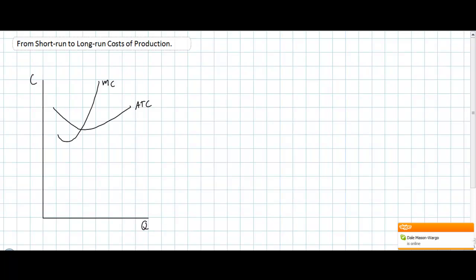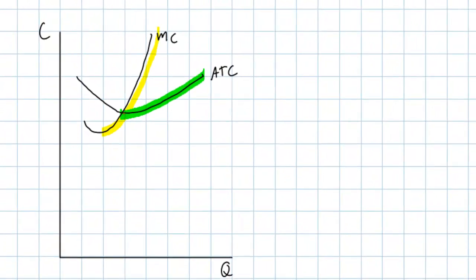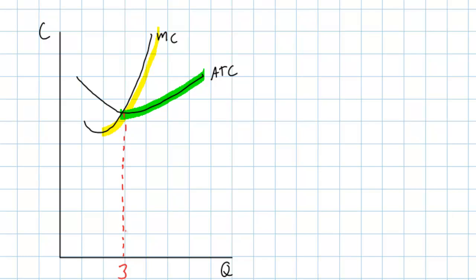Therefore, the costs of additional units of output rise. This explains the upward-sloping section of the marginal cost curve and the fact that average total costs, which represent the per-unit costs of production in the short run, ultimately must increase. If a firm wishes to increase its output beyond a certain point — in this case, beyond three units — we see that at any level of output beyond three units, this firm's average total costs increase, making it less and less economical to produce successive units.